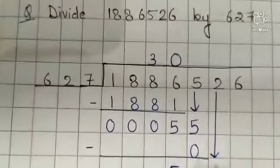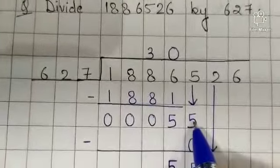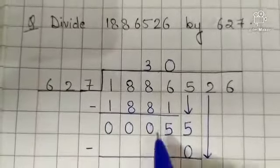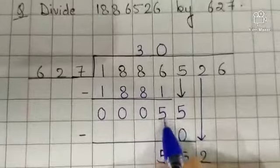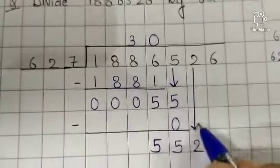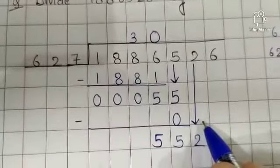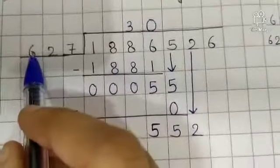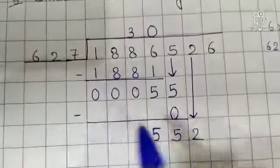Bring down 5. And then 627, 0's are 0. Then subtract 0 from 55. So 5 as it is, 5 minus 0 is 5. Now bring down 2. Now again, 552 is less than 627. So put a 0 again.